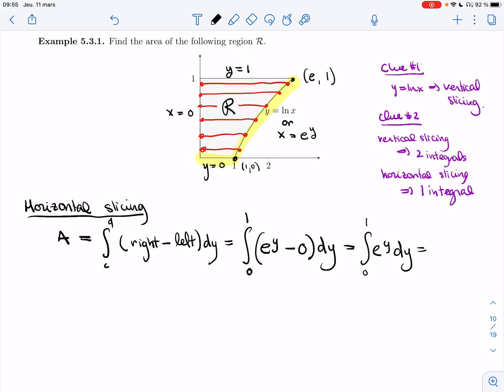And so I get the integral of e to the y. Easiest integral there is. I get e to the y. So I get e to the one minus e to the zero. That's e minus one.